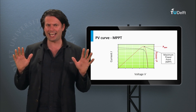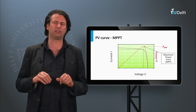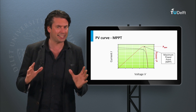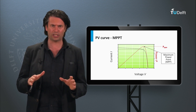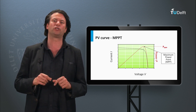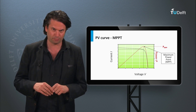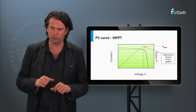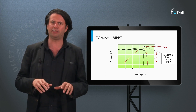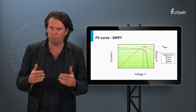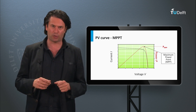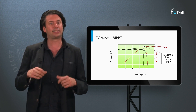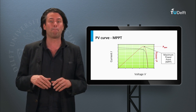Without any external electrical manipulation, the PV module's operating point is largely dictated by the electrical load seen by the PV module at its output. To get maximum power delivered by the PV module, it is therefore imperative to force the module to operate at the operating point corresponding to the maximum power, or as it is generally called, the maximum power point.